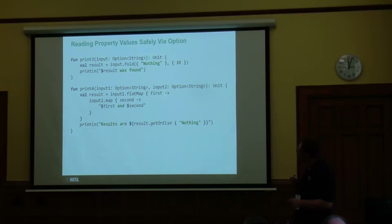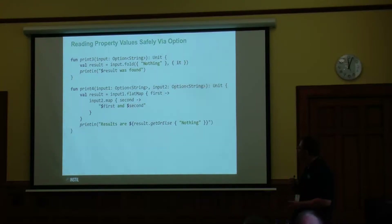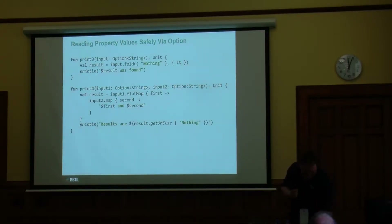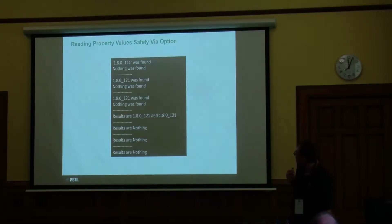Another way we could do it is through a flat map. Let's say we've got two options and we only want to proceed in the case where the first option is a Some. We either want to get back nothing, or the two Somes if both options succeeded. You could try all of those — that's what this code does and it produces those results.